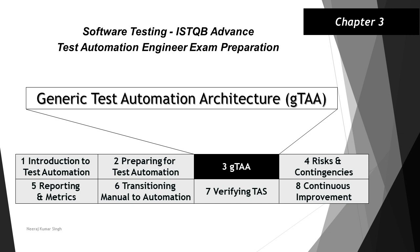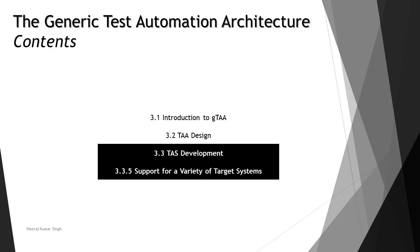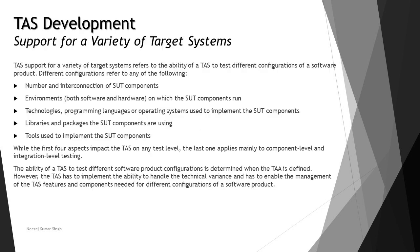Hello everyone and greetings for the day. Welcome back to another tutorial on ISTQB Advanced Test Automation Engineer. We are in chapter 3, looking at the last topic of this chapter: 3.3.5 Support for a Variety of Target Systems. In this tutorial we will be understanding how a TAS will be applicable to support different configurations of a software product.